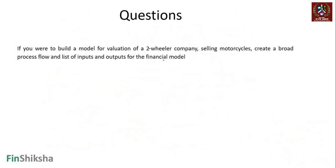Now, it might be a good idea for you to try and exercise on this. Let's say there's a question: if you were to build a model for valuation of a two-wheeler company which is selling motorcycles, what are the inputs you need? What are the outputs you need? How do you define your objective? What broadly will be the process flow? This will be similar to the cinema exercise, just that your inputs and assumptions might change and you have to define whether some of those are available or not available. So that's basically it in this particular video. Thank you.